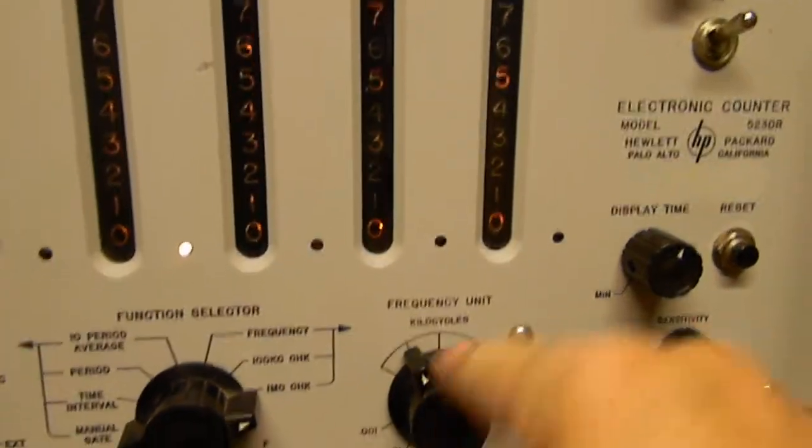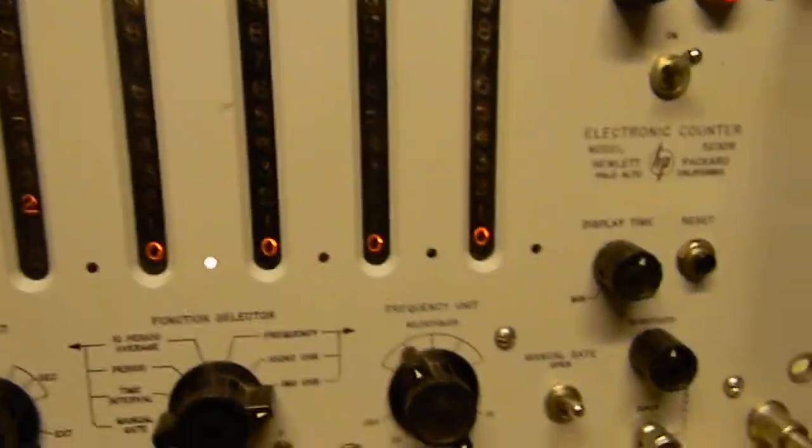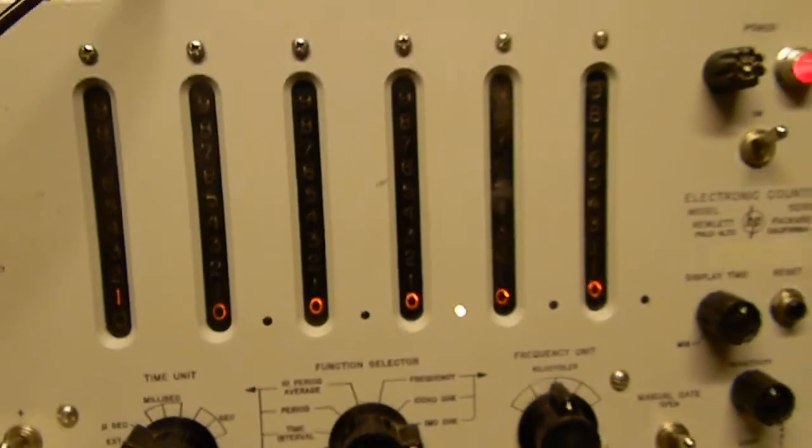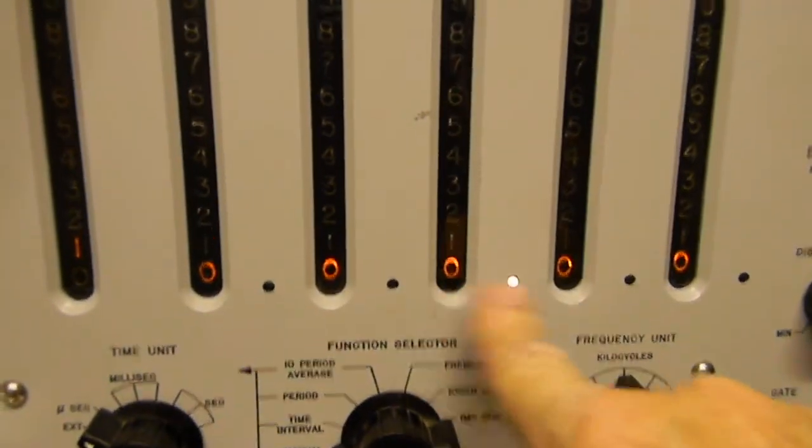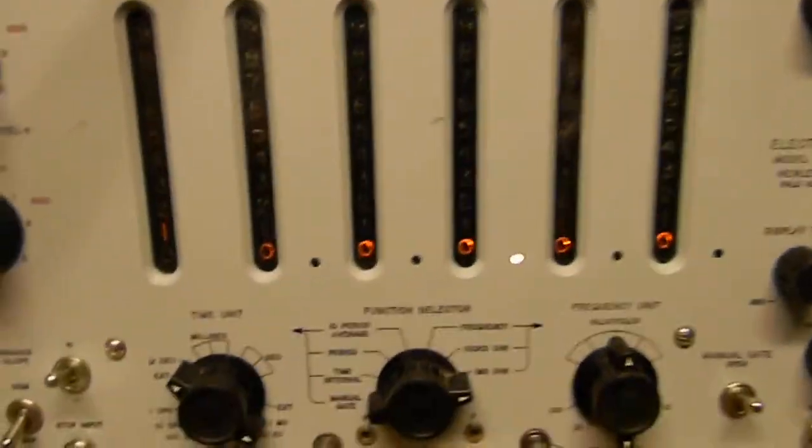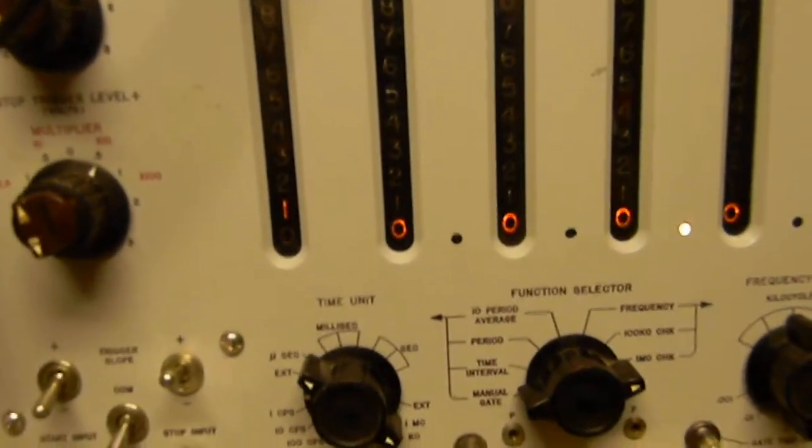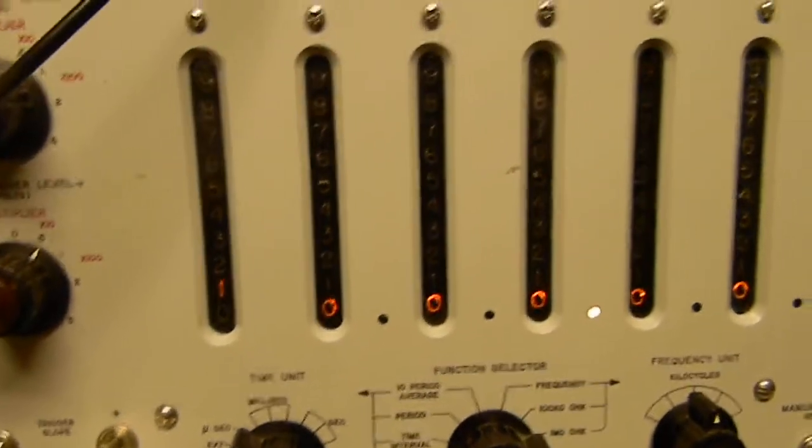If we put it in 1 megahertz, we have to move this to kilocycle. They didn't call it hertz back then, I guess. Everybody assumed that it was kilocycle per second. But there we go. Now we've got 1000.00 kilohertz, which is our megahertz cal signal.